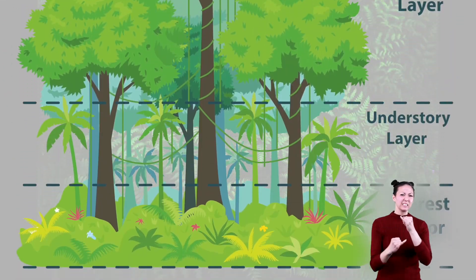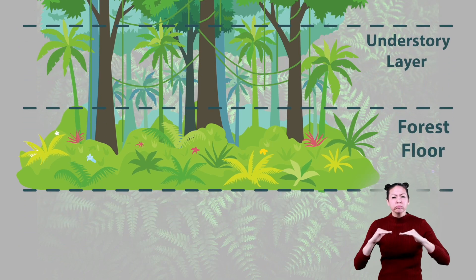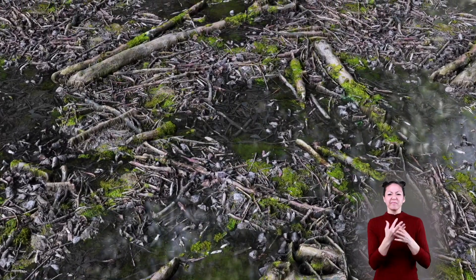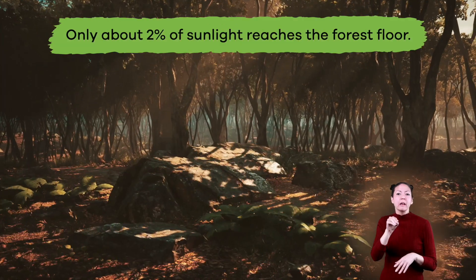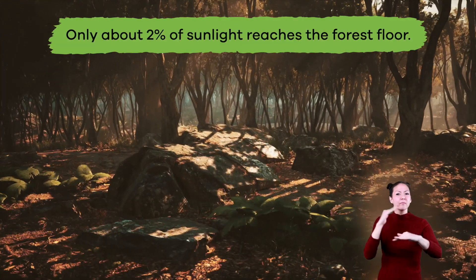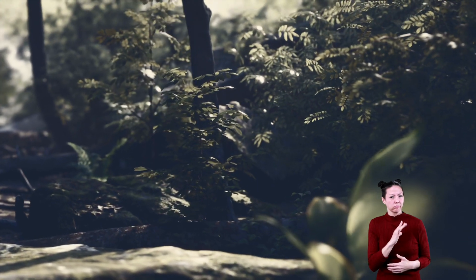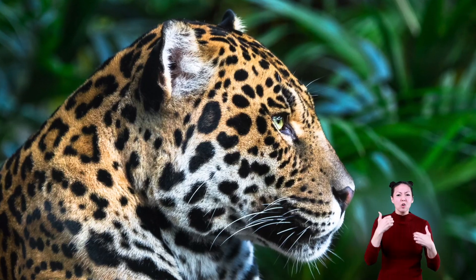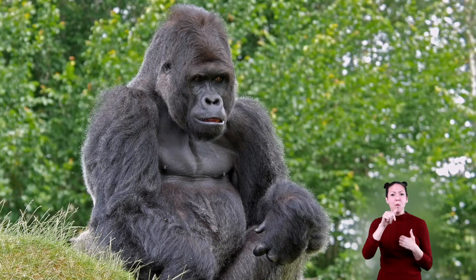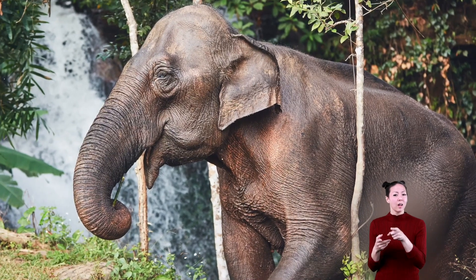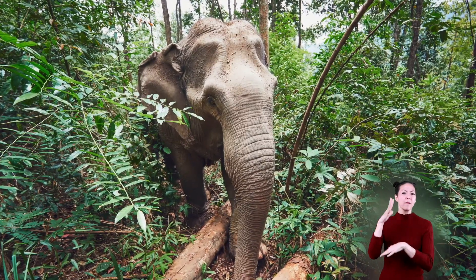Last is the forest floor. The forest floor is dark, damp, and does not have a lot of vegetation. Only about 2% of sunlight reaches the forest floor, which makes it a great hunting ground for animals like jaguars, gorillas, leopards, tapirs, tigers, and elephants, depending on where the rainforest is located.